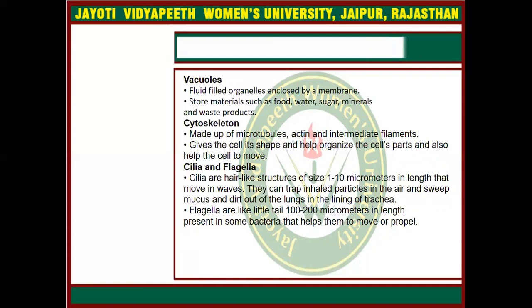The next organelles are cilia and flagella. These are also found in prokaryotes but are also present in eukaryotes. They are hair-like structures about 1 to 10 micrometers in length and have an important role in the lining of some organs such as the lungs. Flagella have an important role in cell movement.